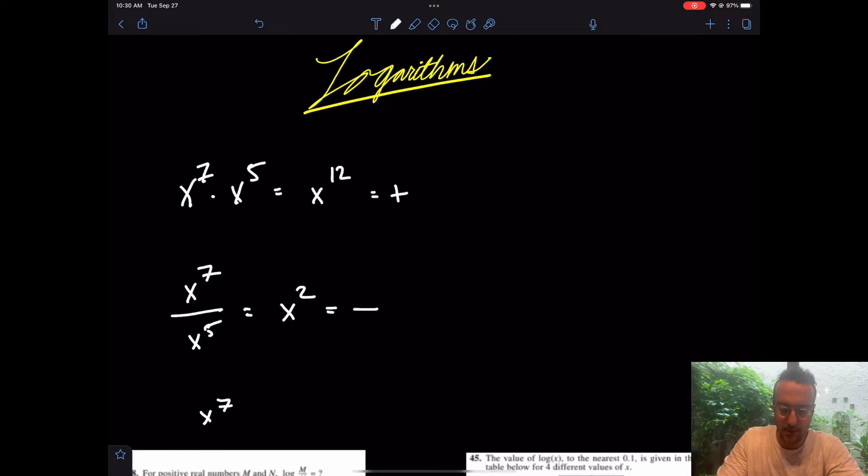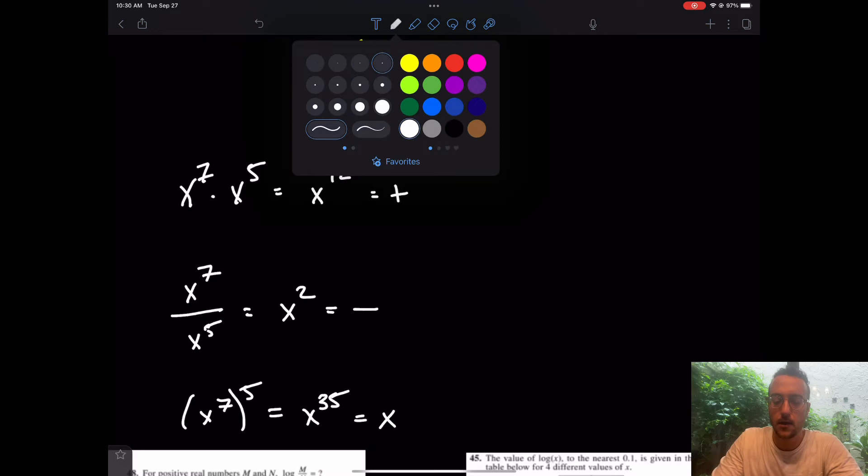And what about if I have x to the 7th to the 5th? What do we do with the power of a power? You multiply. So this is going to be x to the 35th. And really, logarithms are just the inverse of that.